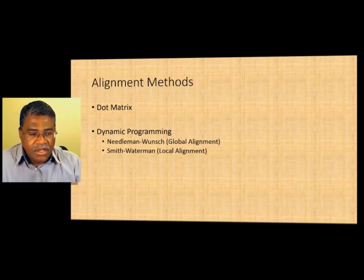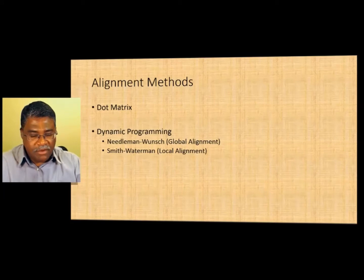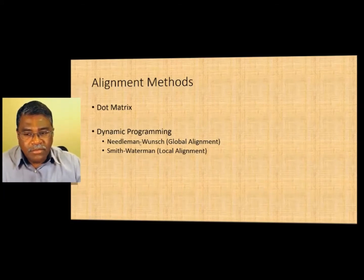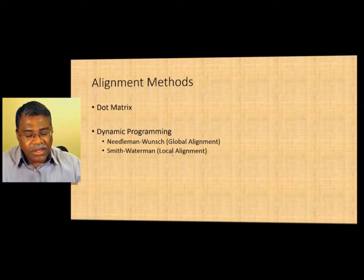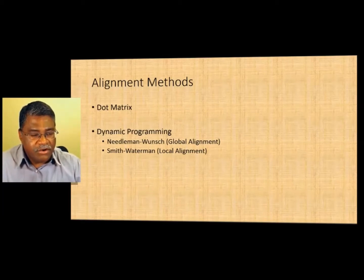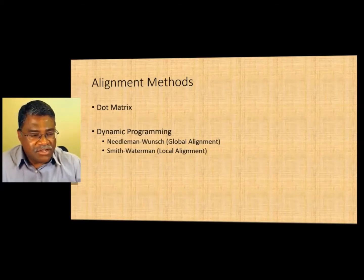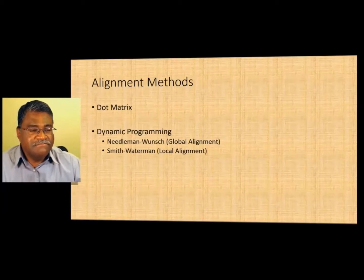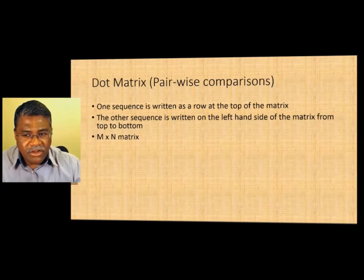What are the alignment methods? There is the dot matrix method and the dynamic programming method. In dynamic programming, there is the Needleman-Wunsch global alignment, which is good for global alignment, and the Smith-Waterman, which is for local alignment. We are going to look at very scaled-down versions, recognizing that this is what somebody would do by hand before writing software to handle typical protein and DNA sequences. So let's look at dot matrix.